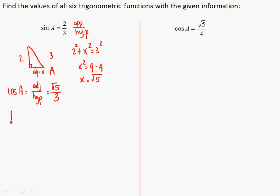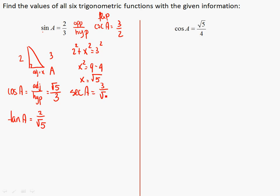The tangent of A is opposite over adjacent: 2 over the square root of 5. Now flip each one for the reciprocals. Flipping the sine gives the cosecant, so the cosecant of A is 3 over 2. Flipping the cosine gives the secant, so the secant of A is 3 over the square root of 5. And the cotangent is the tangent flipped: the square root of 5 over 2.